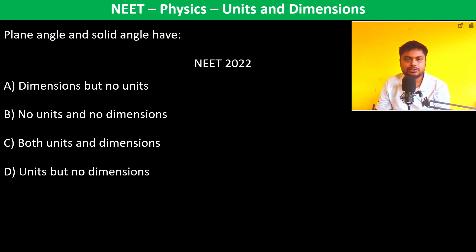Plane angle and solid angle have, so plane angle is arc length divided by the radius. Now arc length is in meters, the radius is also in meters, so therefore this is going to be L to the power 1 minus 1, which is L to the power 0.